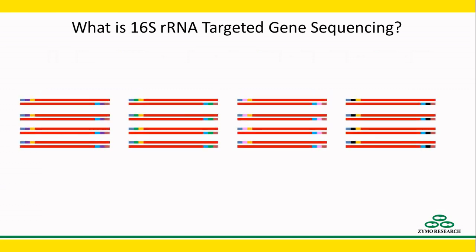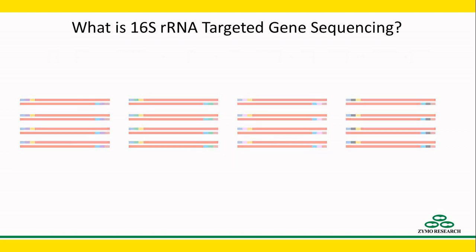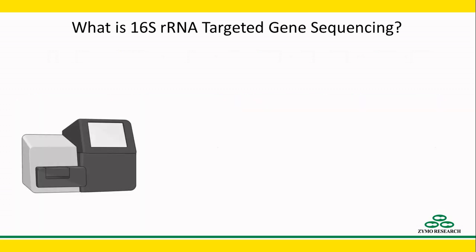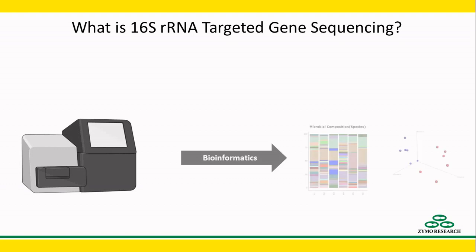Amplicons from separate samples are then given molecular barcodes, pooled together, and sequenced. After sequencing, raw data is analyzed with a bioinformatics pipeline which includes trimming, error correction, and comparison to a 16S reference database.